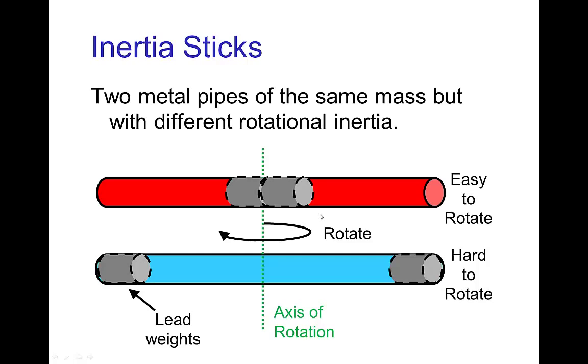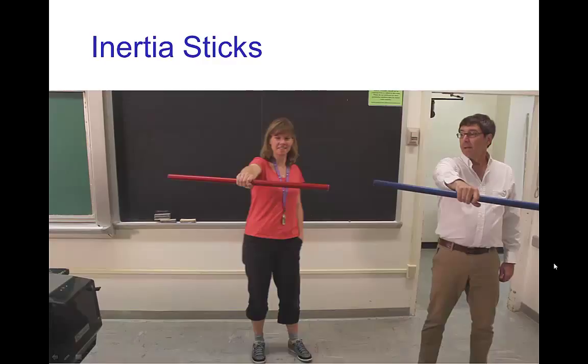The red pipe is easy to rotate. The blue pipe takes a lot of torque to rotate it. Now the trick is that these pipes, the red one which is easy to rotate has lead weights positioned near the center. And the one that's hard to rotate has the same weights, but they're clamped near the ends.